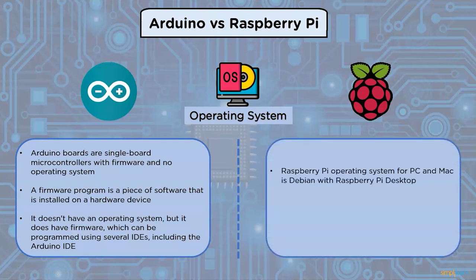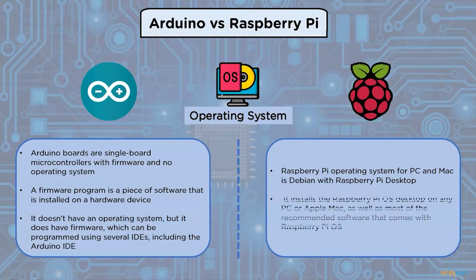The Raspberry Pi operating system for PC and Mac is Debian with the Raspberry Pi desktop. It installs the Raspberry Pi operating system desktop on PC or Apple Mac, as well as most of the recommended software that comes with Raspberry Pi OS.